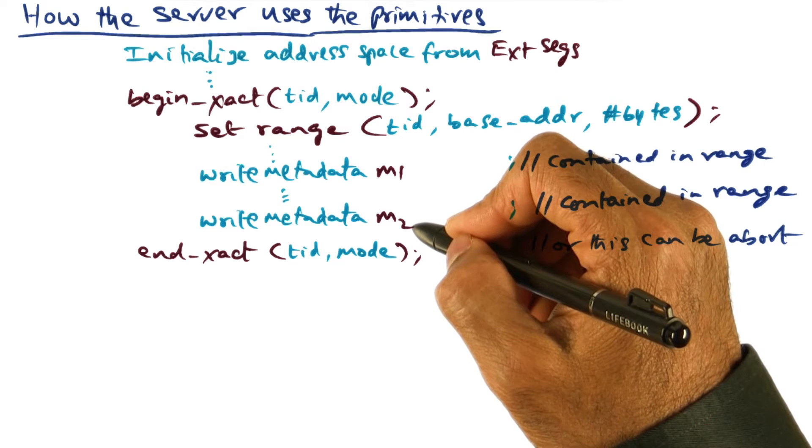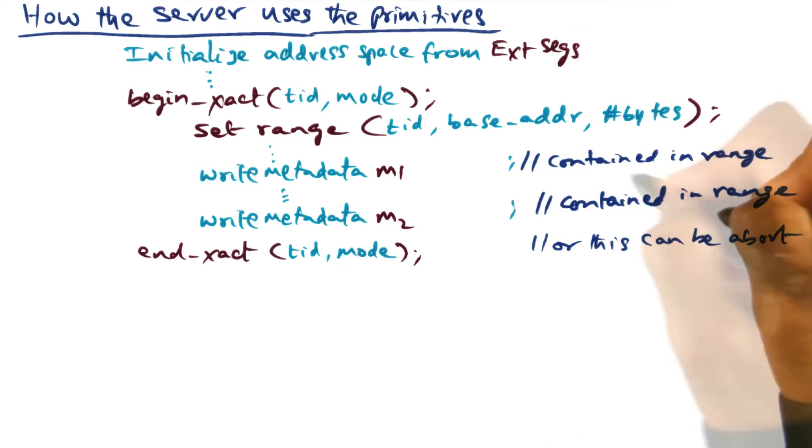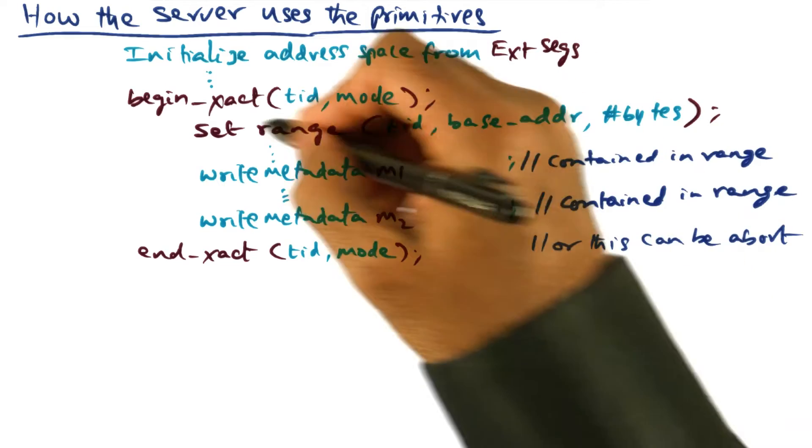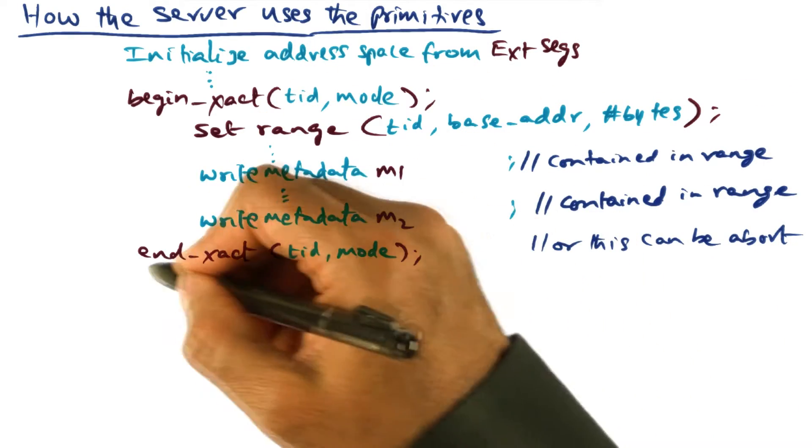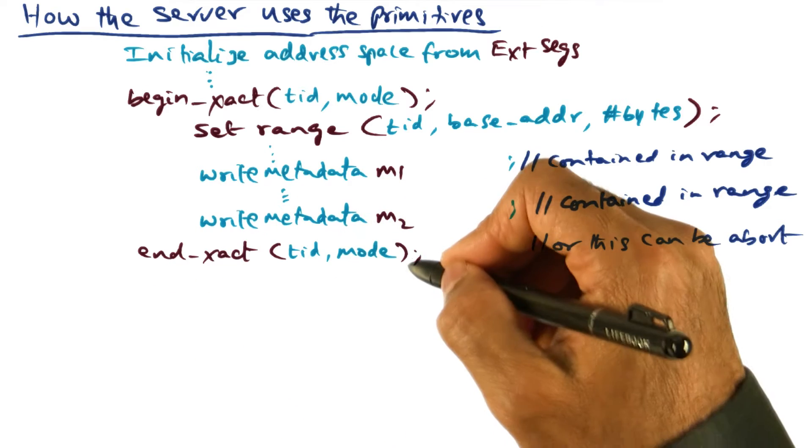And similarly, M2, if it is another persistent data structure that they're modifying, it better be contained in the range again that they set out in the beginning. And finally, when they're done with all the changes and they want to commit, they can call end transaction.